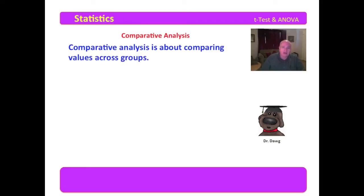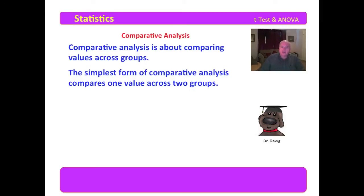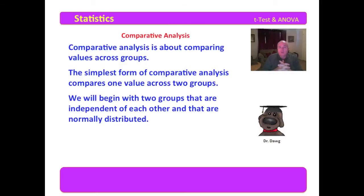This is like when I was a child getting on a spinning merry-go-round. You just have to get on somewhere, and then once you're on, you gain your footing and you move forward. So we're going to look at the simplest form of comparative analysis, which compares one value across two groups. And we will begin with two groups that are independent of each other and that are normally distributed.